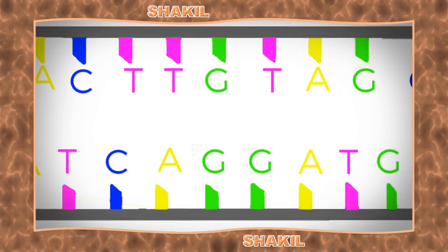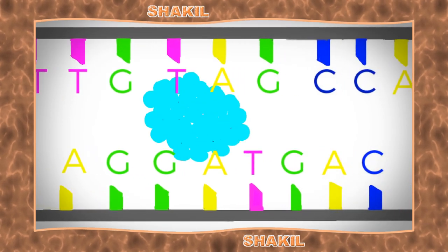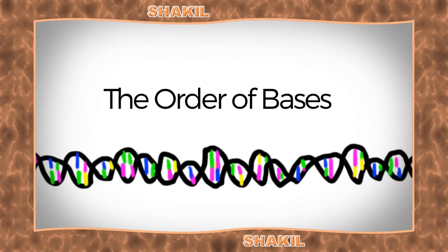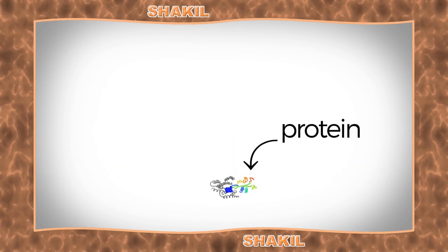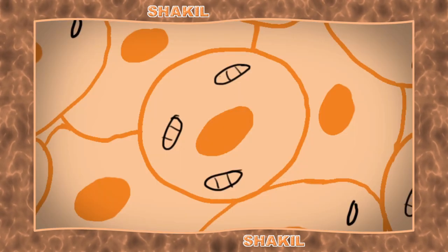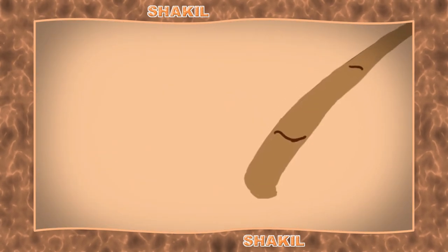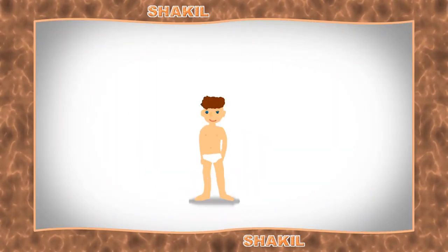Your body reads the genes and the letters like a recipe, and builds protein. The order of the bases in the DNA, along with the length and sequence of the gene, determines the size and shape of the protein it builds. The size and shape of the protein determine the function it will have in your body. Proteins make up cells, cells make up tissue, and tissue makes up organs, like your eyes and your skin.